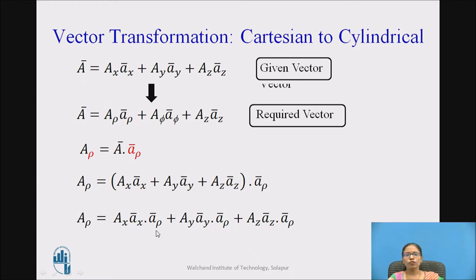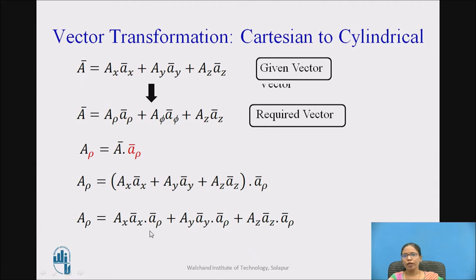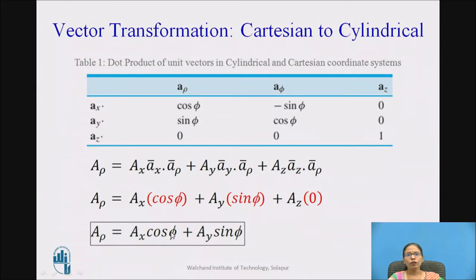I know ax dot ax is 1, ax dot ay is 0, and ax dot az is 0. But I do not know the dot product of unit vectors in different coordinate systems — I do not know the dot product of ax with a_rho. For that, we will follow the table.